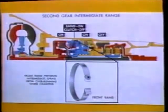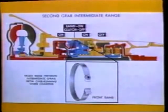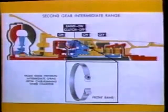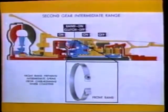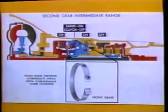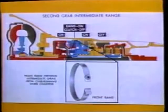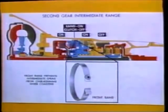In second speed super range, the rear wheels are driving the transmission through the output shaft, creating a tendency for the intermediate sprag to overrun. To prevent the sun gear and direct clutch housing from overrunning, a front band assembly is added. It is applied to the direct clutch housing, which holds the housing stationary, keeping the transmission in second gear.